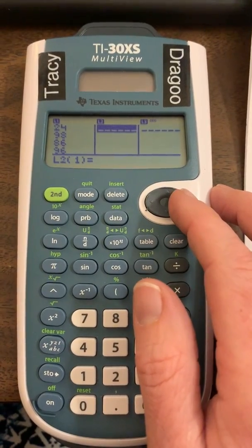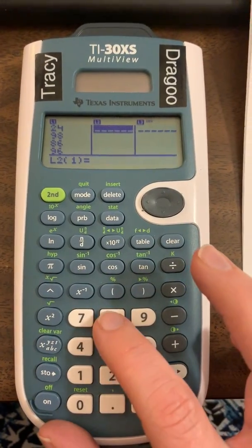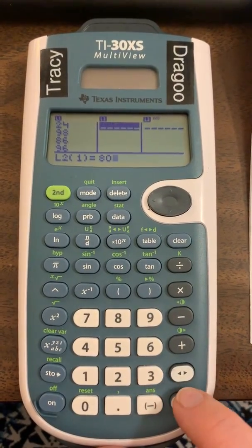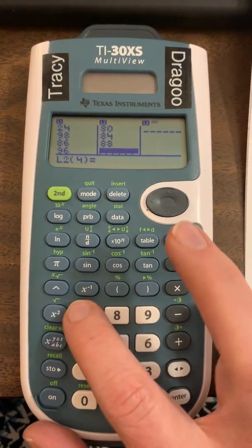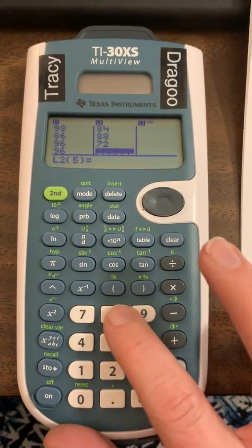And you can arrow over to the second column and put Tristan. His are 80, 84, 88, 72, and 81.